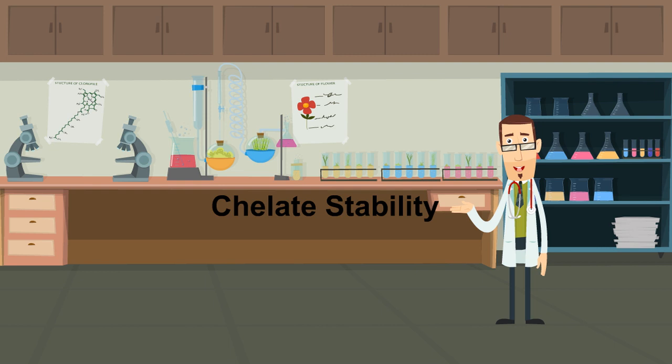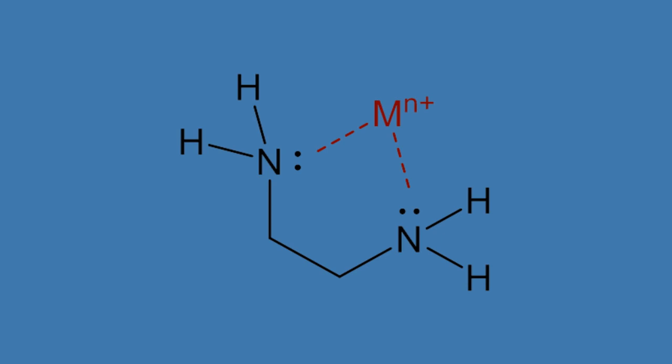5. So what is chelate stability? Chelates are more stable than non-chelates. Stability depends on the size of the ring. In this example, ethylenediamine forms five-membered ring chelates. And this is the most stable ring size in the metal complexes.